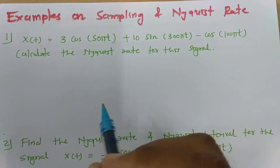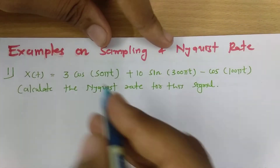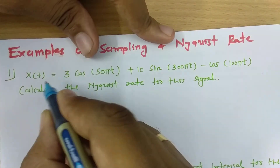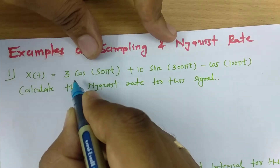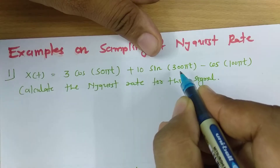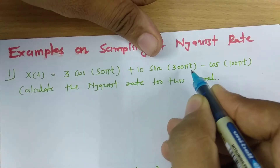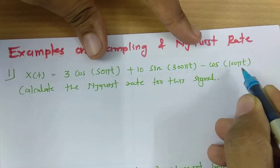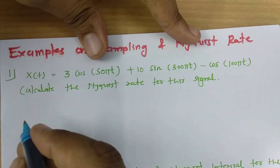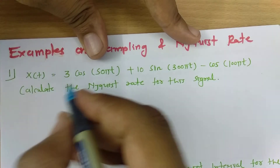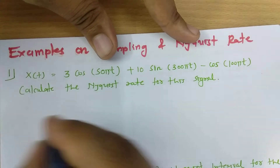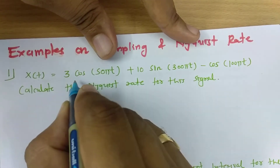Let us begin with the first problem. The signal x(t) is given by 3cos(50πt) + 10sin(300πt) - cos(100πt). We need to calculate the Nyquist rate for this signal. To do that, we identify the different frequency components present.